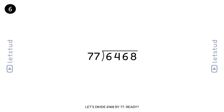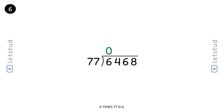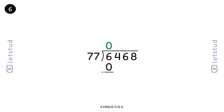Let's divide 6468 by 77. Ready? We start with the first digit, 6. 77 fits into 6 zero times. 0 times 77 is 0. 6 minus 0 is 6. You're off to a brilliant start.